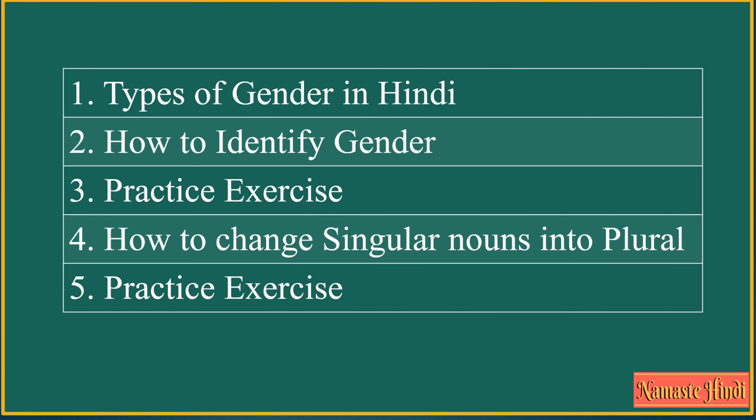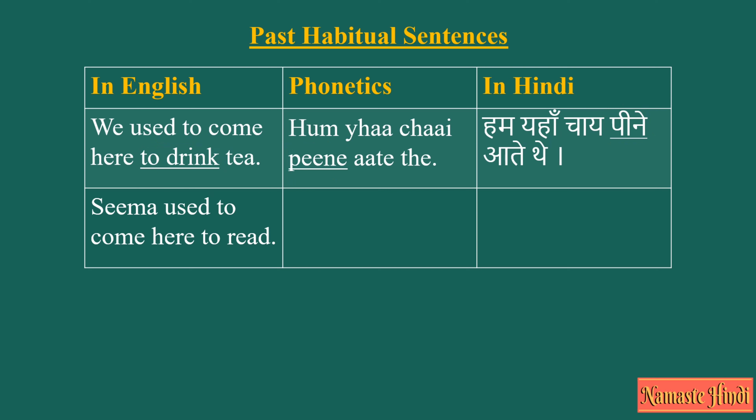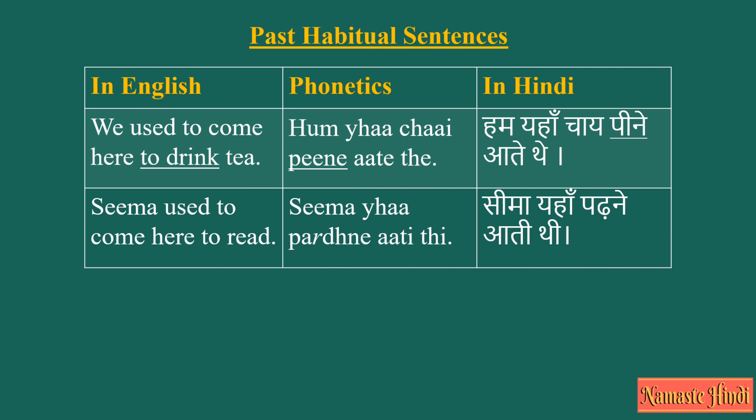If you want to learn the gender of nouns in detail, watch the video 'Gender in Hindi' where you will find all the information about Hindi gender. Second example: Sima used to come here to read — Sima yahaan padne aati thi. Here 'to read' is the second verb or action, so it would be 'padne' in Hindi, which is a masculine plural verb.